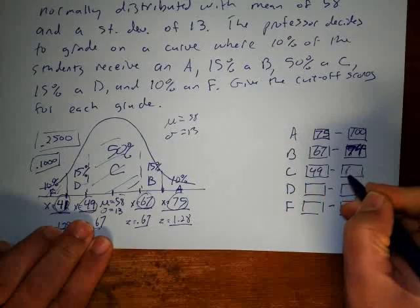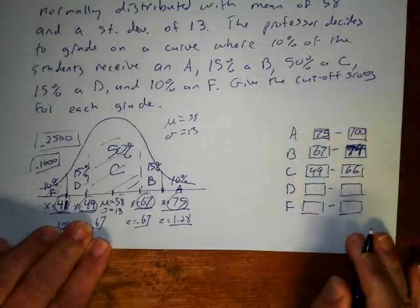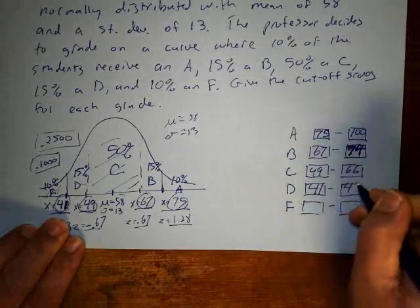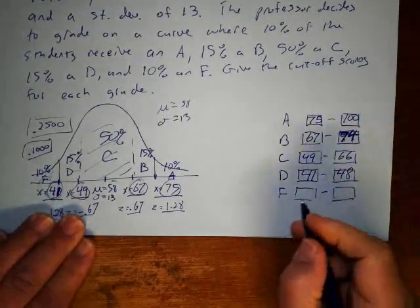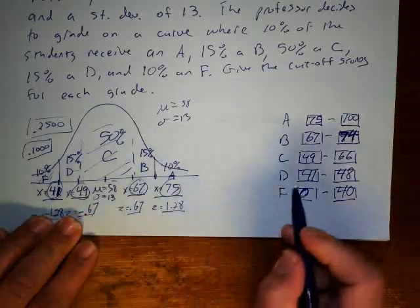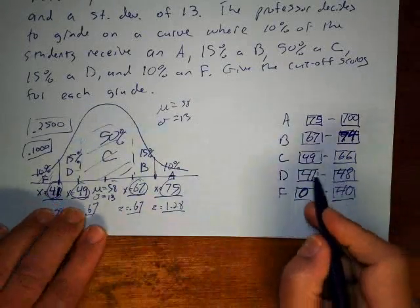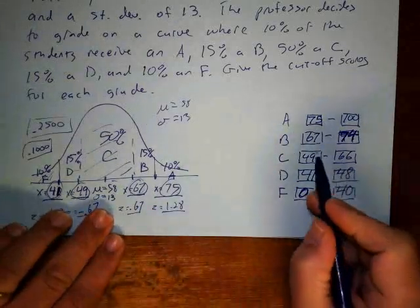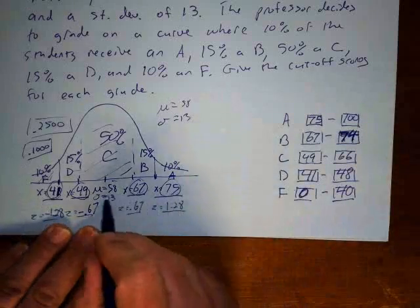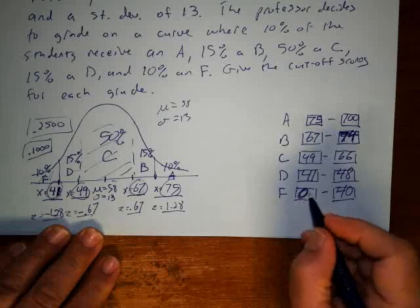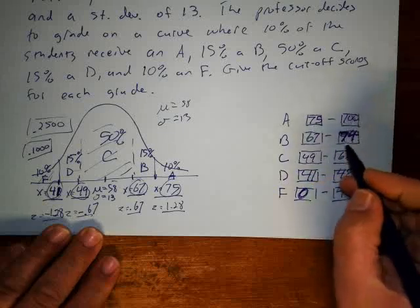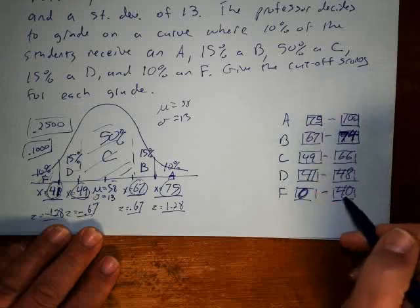D goes from 41 up to 48. F of course starts at zero and goes up to 40. So: F is 0–40, D is 41–48, C is 49–66, B is 67–74, A is 75–100. These lower cutoffs are exactly the values we calculated, and the upper cutoffs go right below the next grade's lower boundary, starting from 100 at the top. That's how this problem is done.